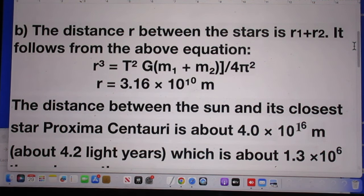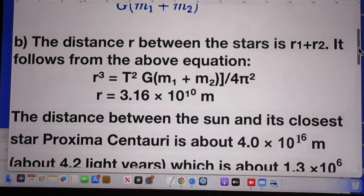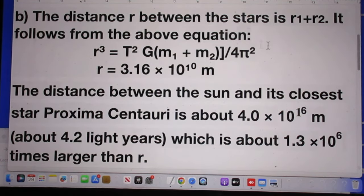It follows from the above equation what R³ is, because this is R³. And so you find R, and you know the masses, and you know capital G, and you know T². And so the radius is 3.16 times 10 to the 10 meters.